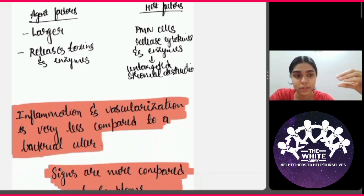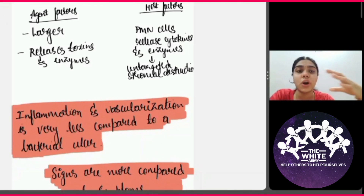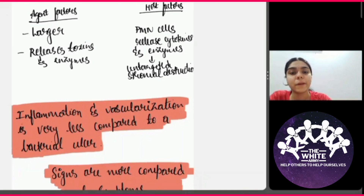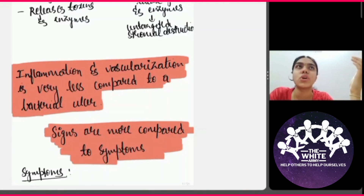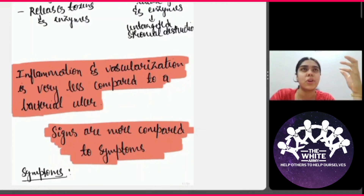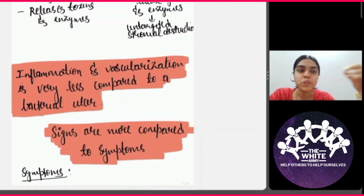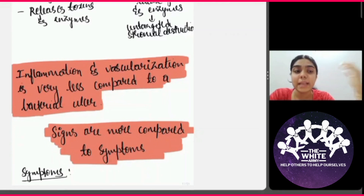There is lesser vascularization, so the pain and redness we usually see in a bacterial ulcer are not as prominent in a mycotic or fungal corneal ulcer. Because of this, signs are always going to be more compared to symptoms. When a patient comes, they will not present with extreme pain or redness — it will be milder symptoms like mild blurring, loss of vision, mild photophobia, or mild irritation. We have to be very careful in picking up a fungal corneal ulcer.